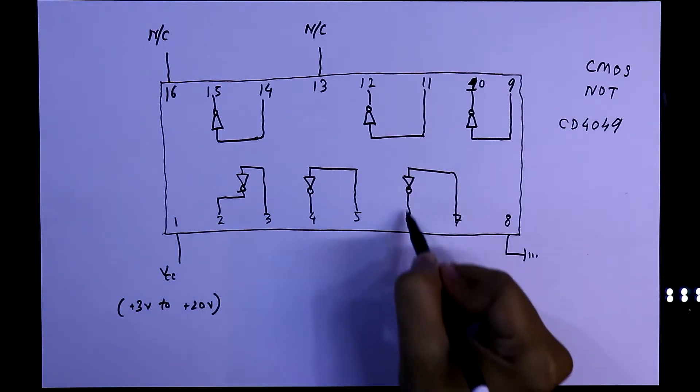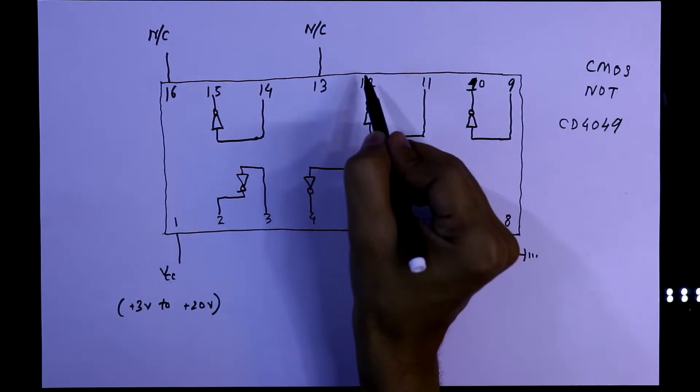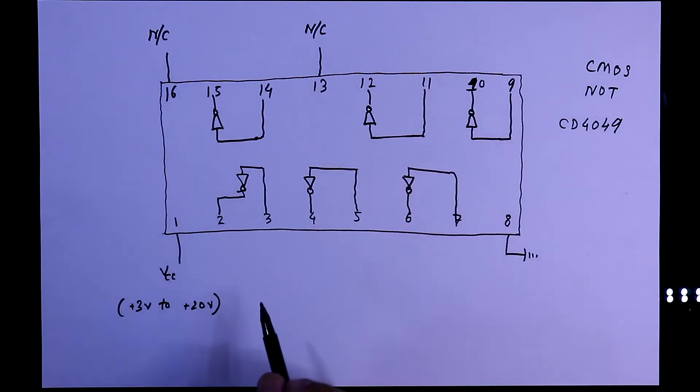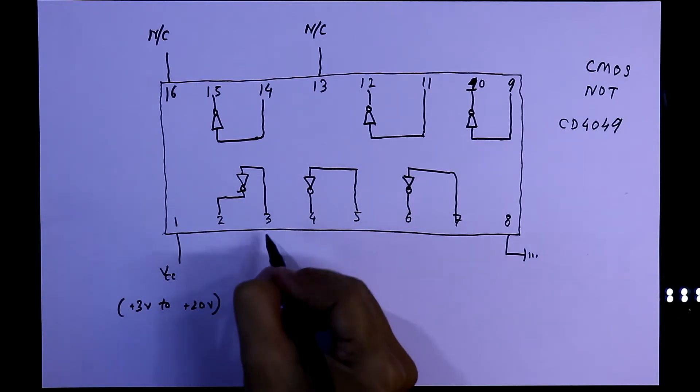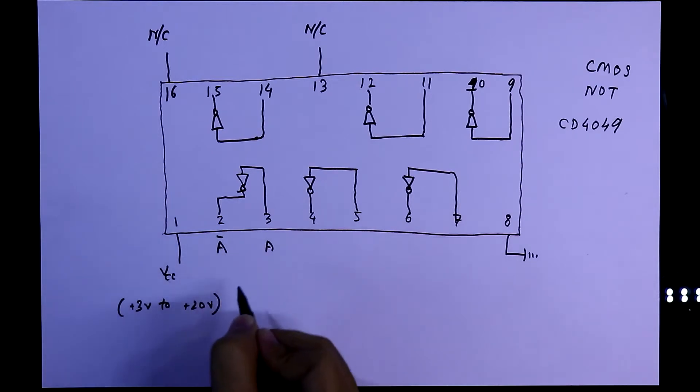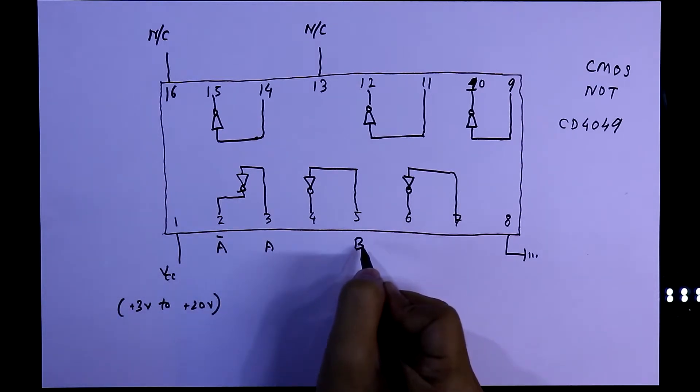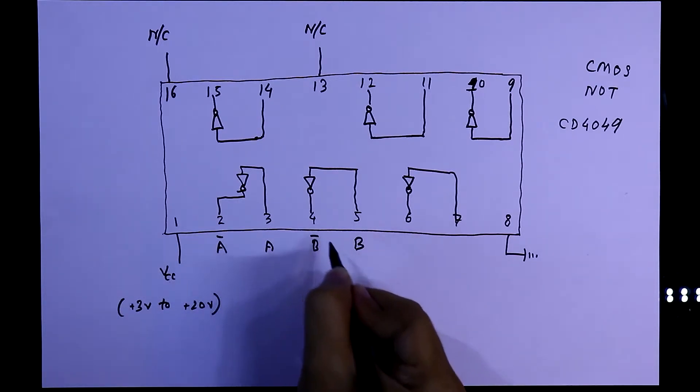Like this: 9 to 10, 11 to 12, 14 to 15. If you provide A in the input, then the output will be A inverse. If B is input, then B inverse will be output.